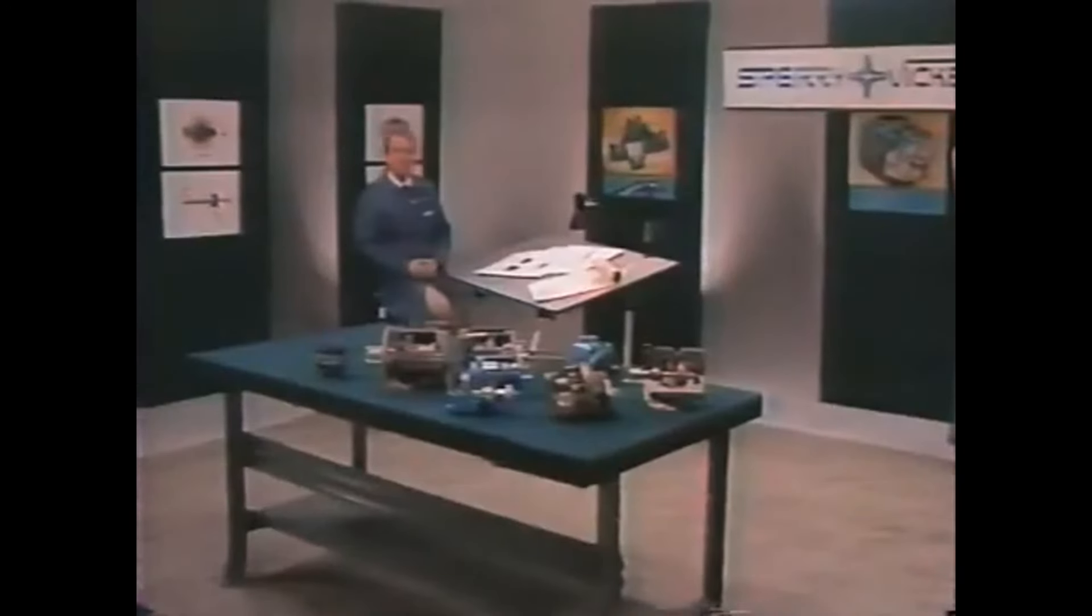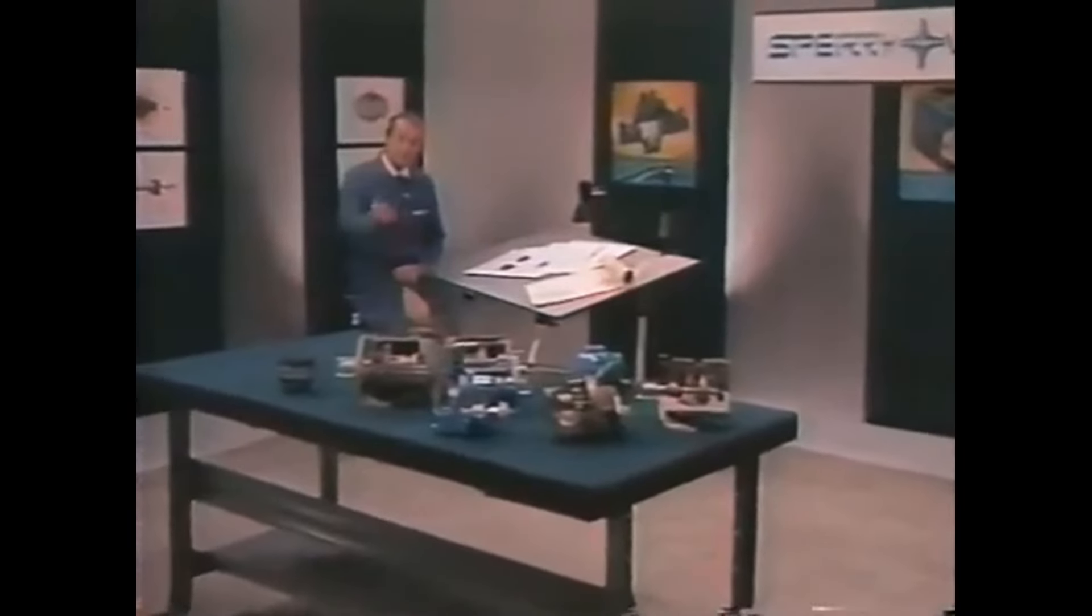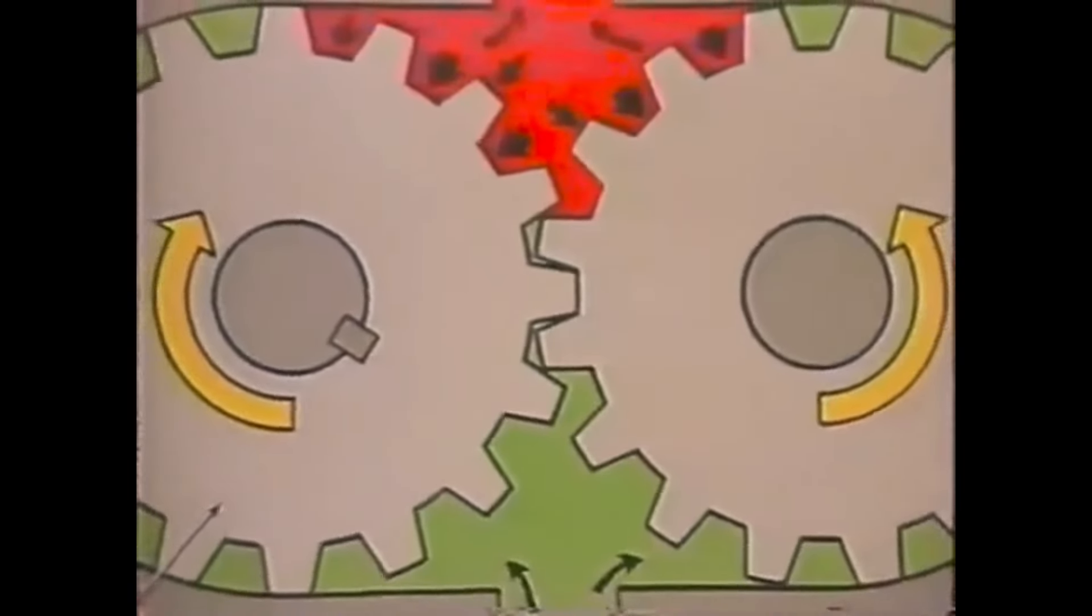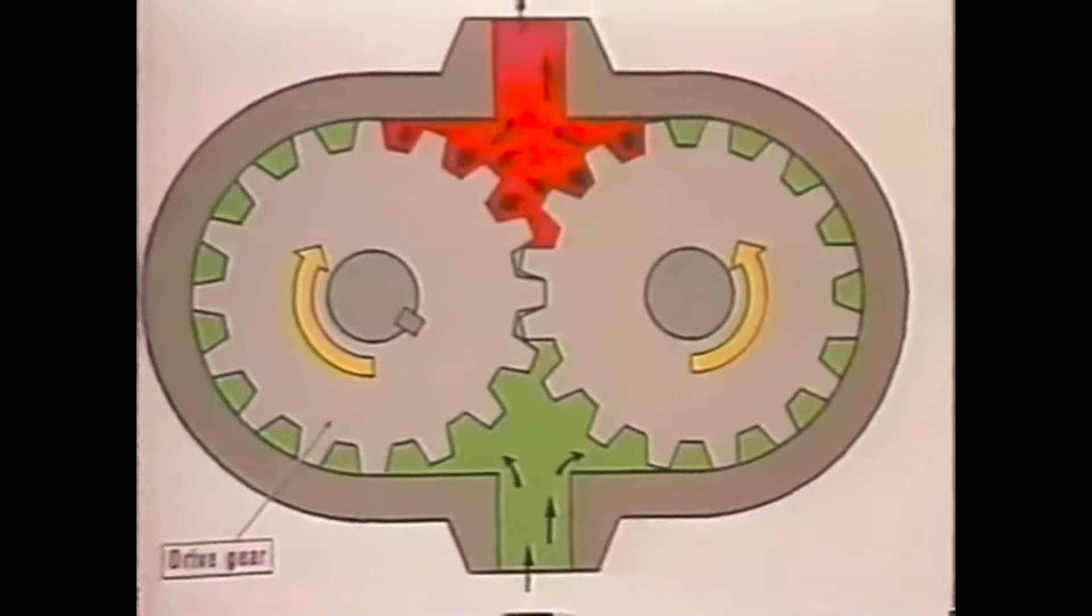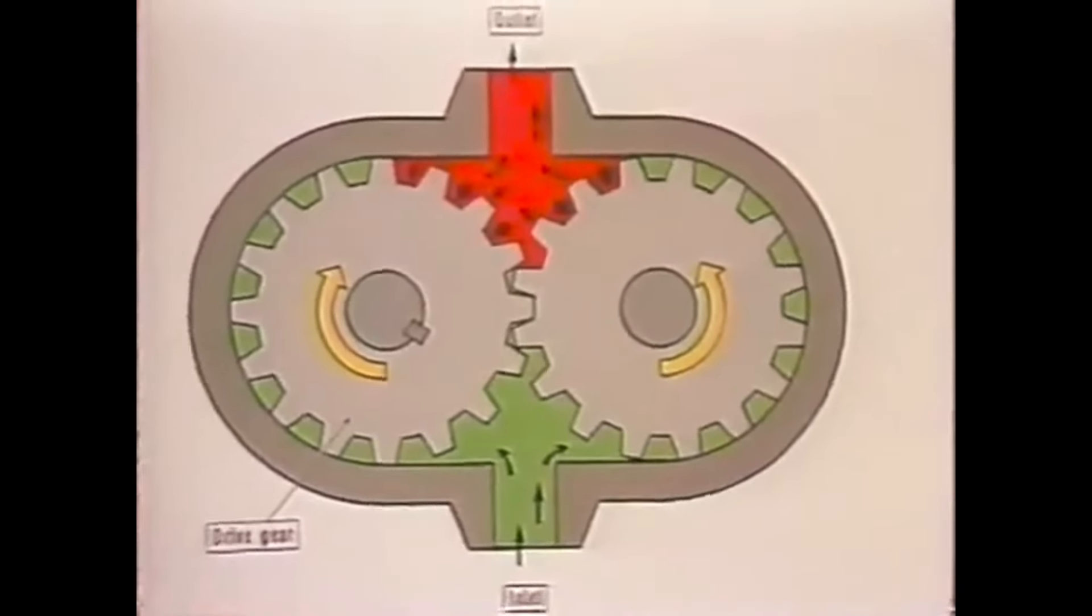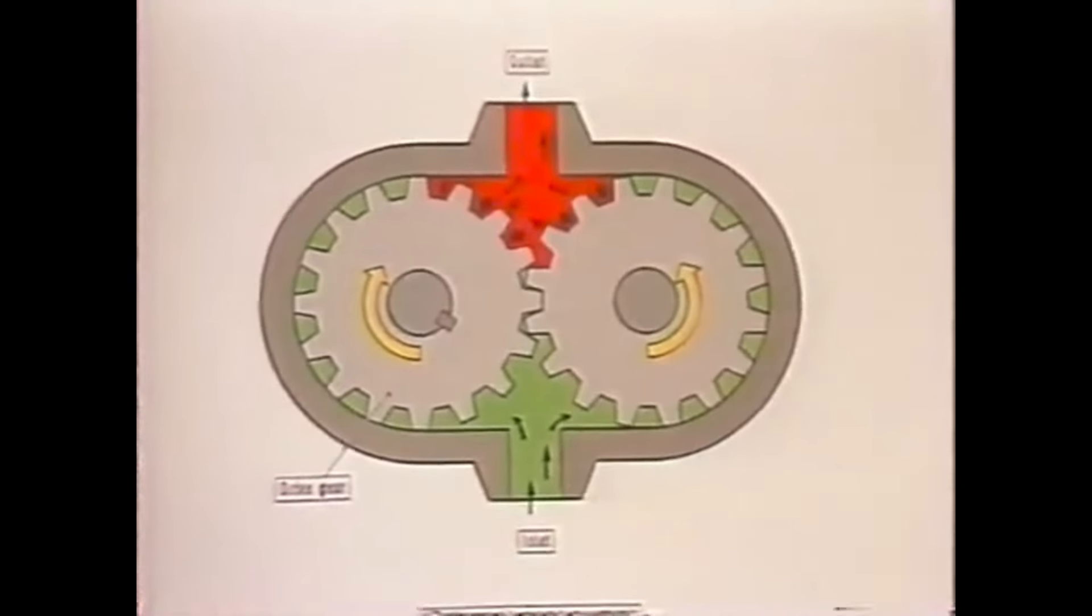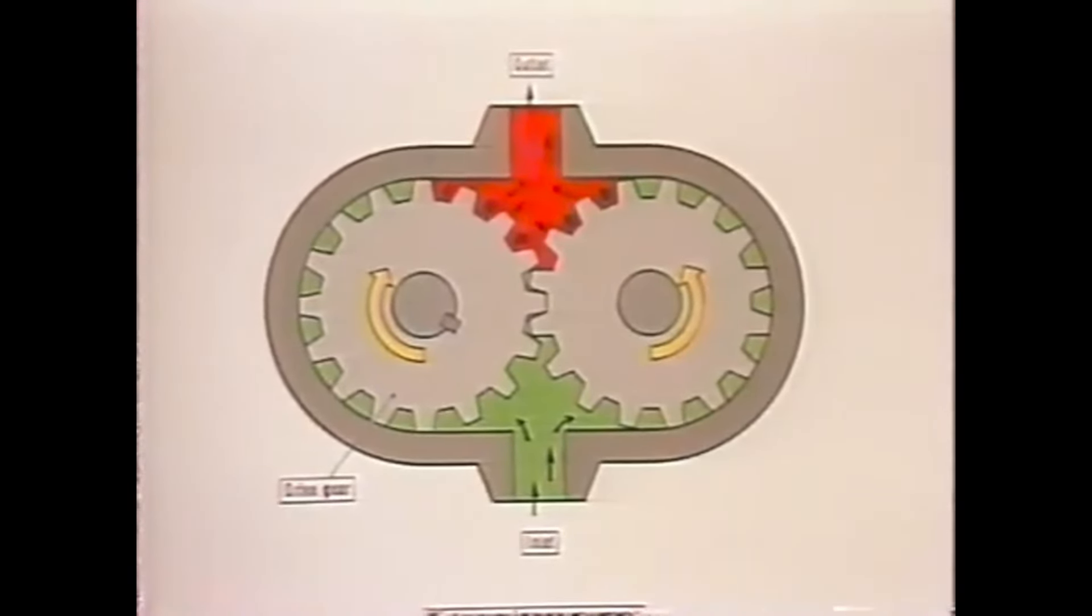This principle applies to all positive displacement pumps, whether they be vane, piston, or gear type. Perhaps the simplest and easiest to understand is a gear pump. One gear driven by the drive shaft meshes and rotates another, called the driven gear. Both are contained within a close-fitting housing. A partial vacuum is created at the inlet as the gear teeth unmesh, and fluid flows in to fill the void. Then the fluid is carried around the gears to the pump outlet. As the teeth go back into mesh, oil is forced out through the outlet port.